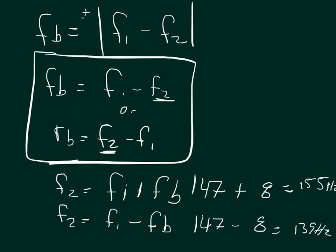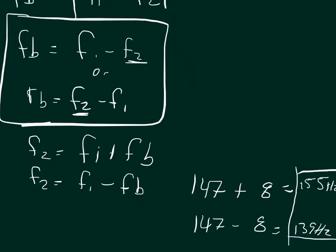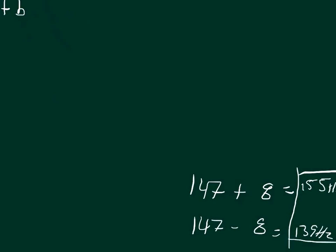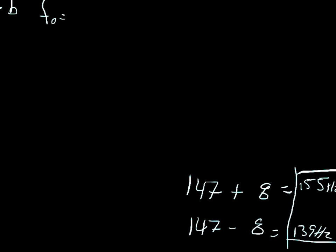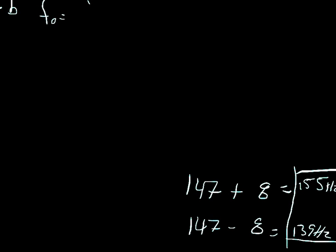Now we can use the Doppler equation and solve for both of these frequencies, and that will give us both possible speeds. I'm just going to move some stuff out of the way, now that we've got our possible frequencies, and we're going to write the Doppler equation. The frequency of the observer equals the frequency of the source times the velocity of sound propagating through the medium, in this case air, plus the velocity of the observer, divided by the velocity of sound minus the velocity of the source.